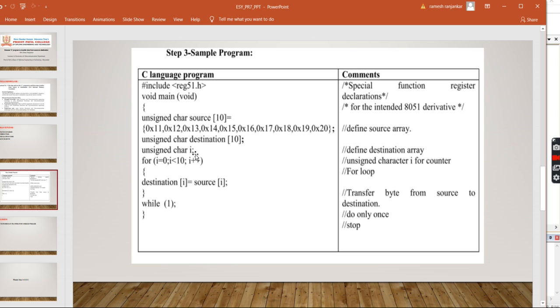Then counter हम लोग use करेंगे, counter इसलिए है कि, एक number display होने के बाद, आपको cursor जो है, second number के move करना है. तो जितने आपके array में limits है, उतना आपको count value भी set करना है. So, we write for statement for i is equal to 0.